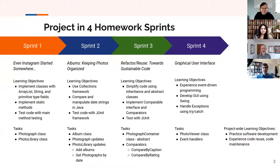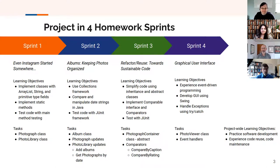In the first sprint, students will develop their first classes. They'll write the photograph class with the caption and file name, and the photo library that has an array list of photographs and some metadata. Students will gain experience implementing classes, implementing static methods, and testing their code using main method testing.